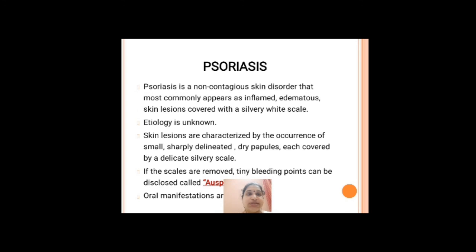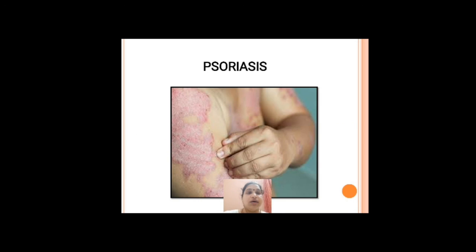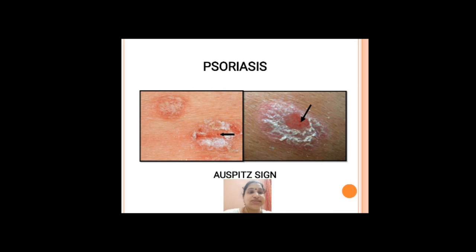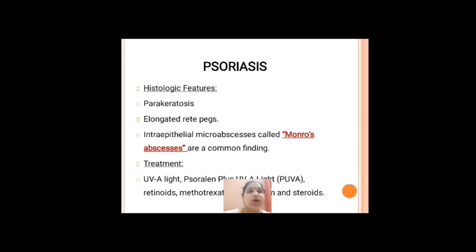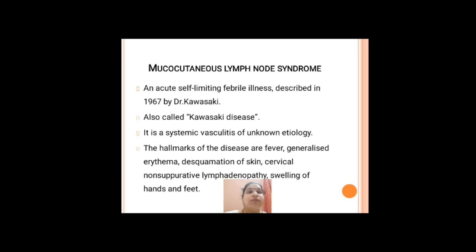Psoriasis is a non-contagious skin disorder; oral mucosal lesions are very rare. Skin lesions appear as small dry papules covered by a silvery scale. When this silver-like scale is removed, you can see tiny bleeding spots called the Auspitz sign. Histologically, inside the epithelium there are abscesses called Munro's abscesses. It is treated with UV light, steroids, or PUVA therapy — psoralen plus UV light.